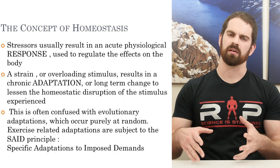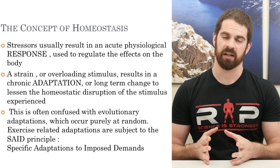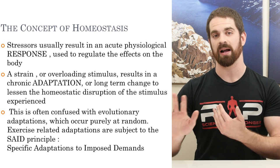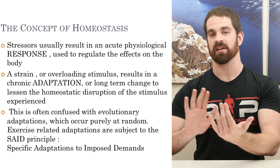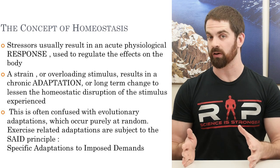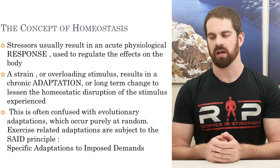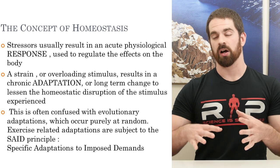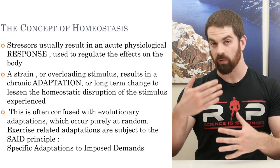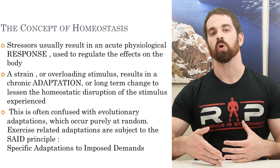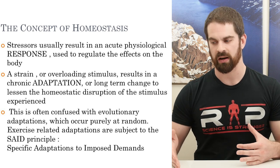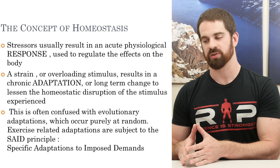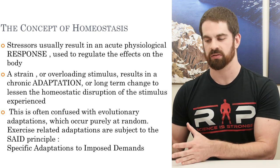Stressors usually result in an acute physiological response, which is a feedback mechanism to lessen the effect and maintain a normal homeostatic range — a buffering effect used to regulate whatever stressors we're encountering. A strain, on the other hand, is when we have an overloading stimulus resulting in a chronic adaptation of the body — a long-term change to lessen the homeostatic disruption of the stimulus that was experienced.